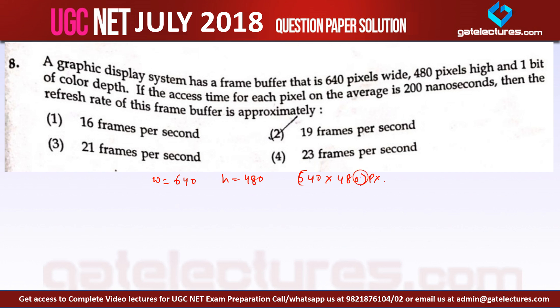And one bit of color depth. If the access time for each pixel on average is 200 nanoseconds, that is 200 nanoseconds access time for each pixel, then the refresh rate of this frame buffer is approximately which one of the following.